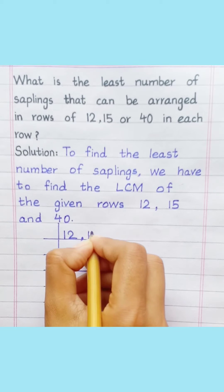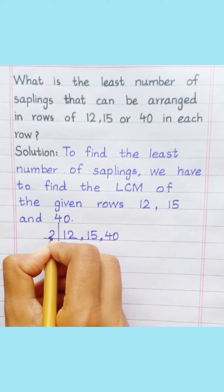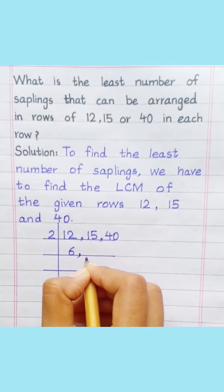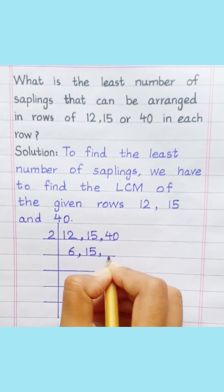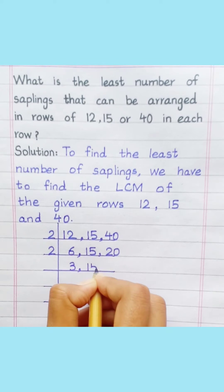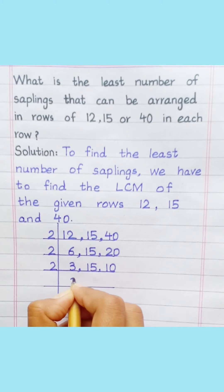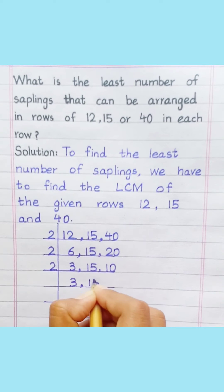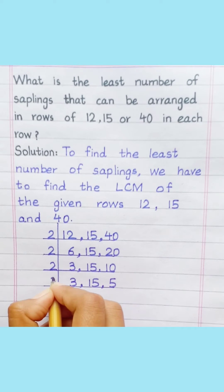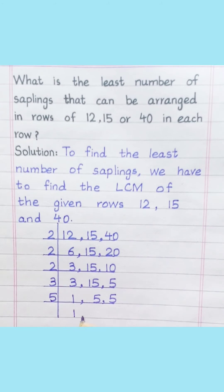12, 15, 40. 2 sixes are 12, 2 twenties are 40, 2 threes are 6, 2 tens are 20, 2 fives are 10, 3 threes are 3, 3 fives are 15, 5 fives are 5.